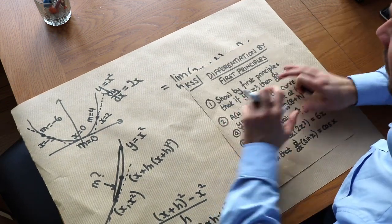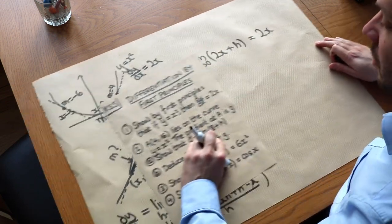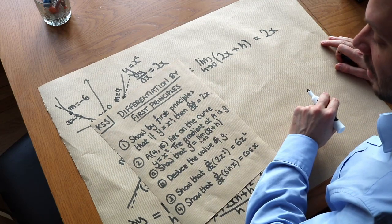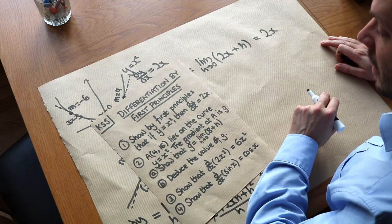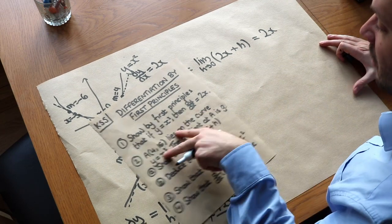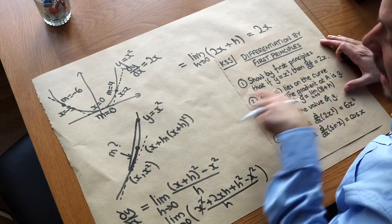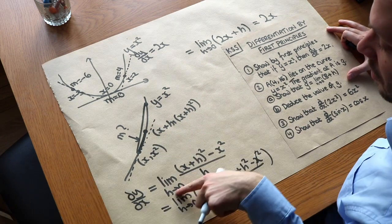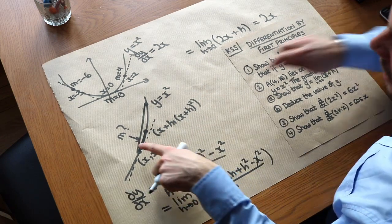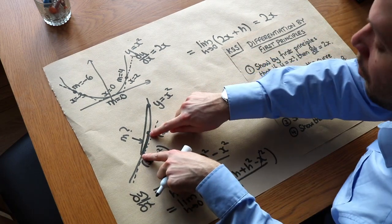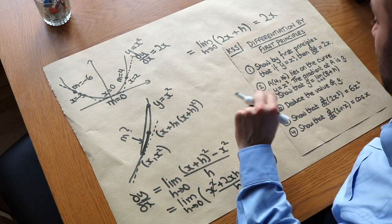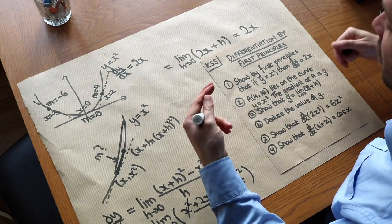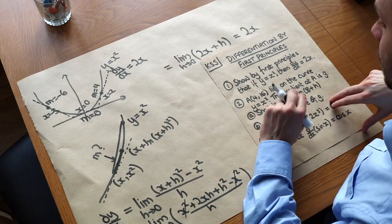And indeed that's what we expected — we knew the gradient function when y equals x squared was 2x. So we've solved the first question: show by first principles that if y equals x squared, then dy/dx equals 2x. This technique of using the limit and considering two points which are close by is known as differentiation by first principles.